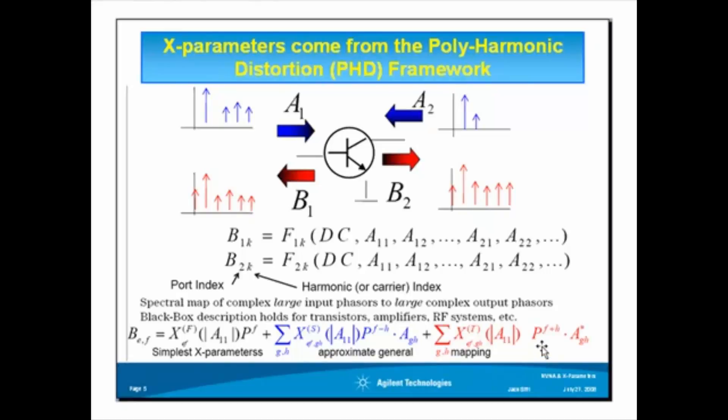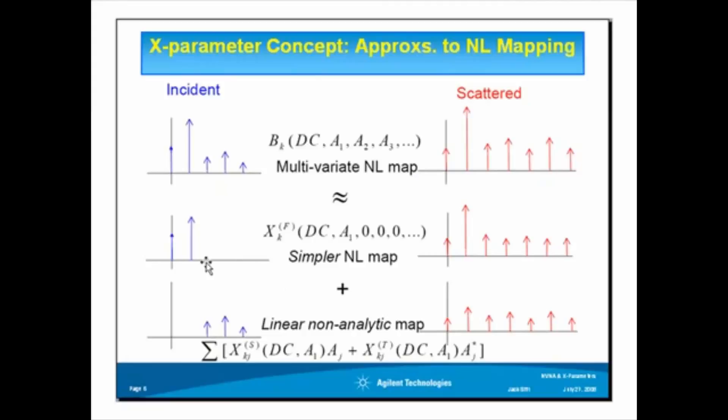So, you can see here from this slide, the PHD framework concept graphically illustrated here. The nonlinear incident wave is broken into the fundamental large signal tone, which is the F term, and the harmonics and mixing products, which is the S and the T terms. And, they're added together to complete the whole puzzle.